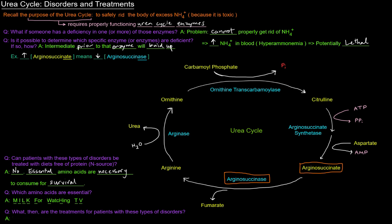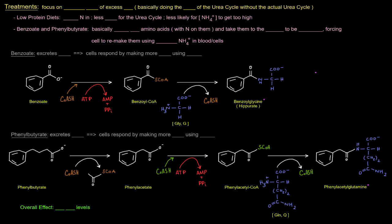If we can't treat these patients with diets free of protein, what are the treatments for patients with these types of disorders? These treatments focus on getting rid of excess nitrogen — basically doing the job of the urea cycle without the actual urea cycle. One treatment option is low protein diets. The idea is simply that there's less nitrogen intake, which means less need for the urea cycle, making it less likely that ammonium ion concentrations will get too high. Just because one enzyme is deficient doesn't mean the urea cycle cannot happen at all — it just can't happen to a great extent. So you can still get some protein, just not too much, keeping the workload for the urea cycle low. Less nitrogen in means less need for the urea cycle and the deficiency is seemingly less detrimental.